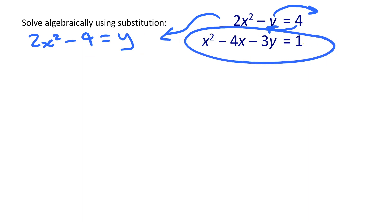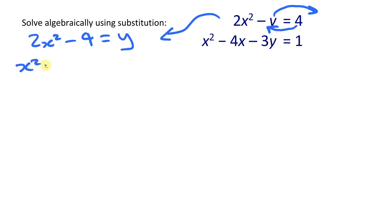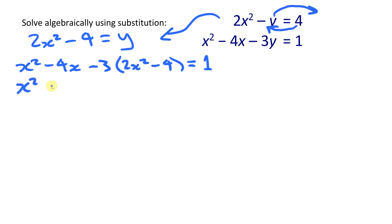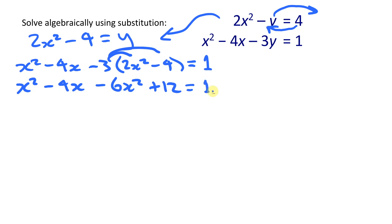Now I can replace y in the second equation with 2x squared minus 4. Rewriting that equation: x squared minus 4x minus 3, but replacing y with 2x squared minus 4, and there's a 1 on the other side. Eliminating the brackets: x squared minus 4x, then minus 6x squared when multiplied out, plus 12 from minus 3 times minus 4, and the 1 on the other side.